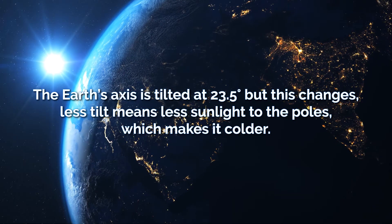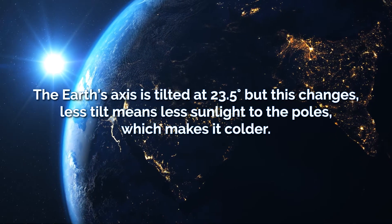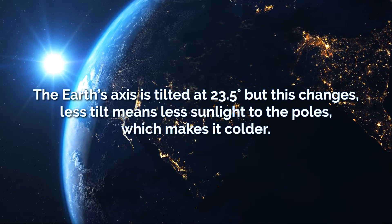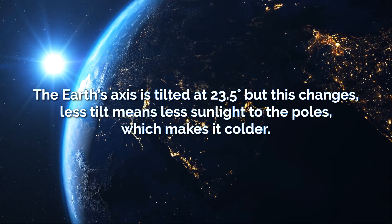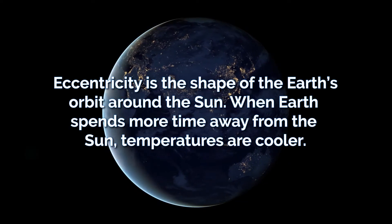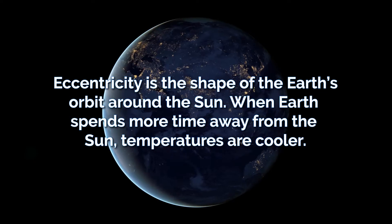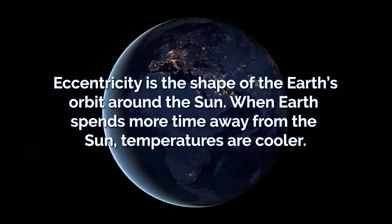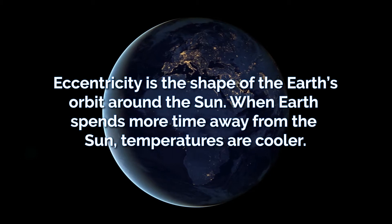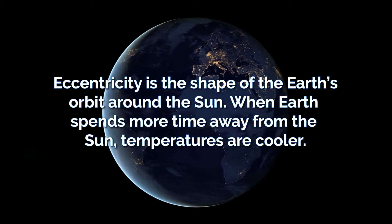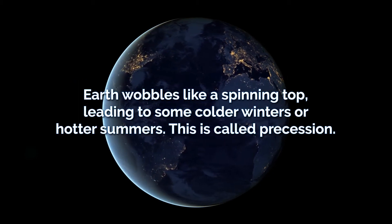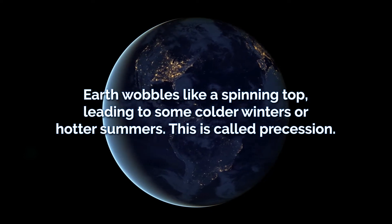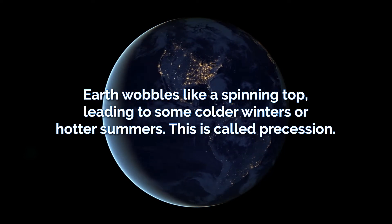The Earth's axis is tilted — currently at 23.5 degrees — but this changes. Less tilt means less sunlight to the poles, making it colder. Eccentricity is the shape of the Earth's orbit around the sun; it's not fixed, and when the Earth spends more time away from the sun, average temperatures are colder. The Earth also wobbles like a spinning top, leading to colder winters or hotter summers. This is called precession.